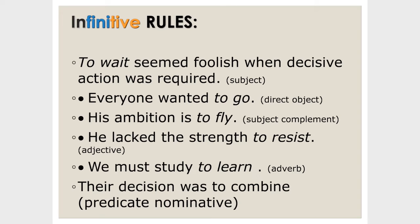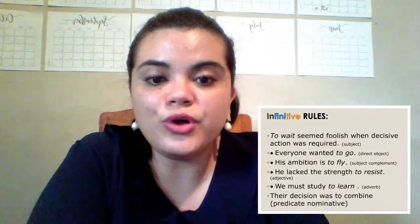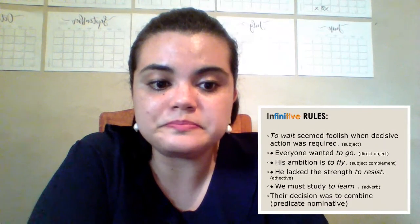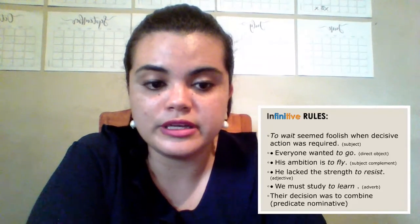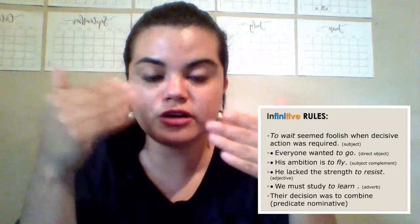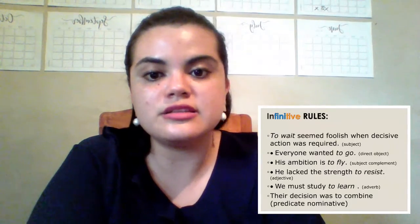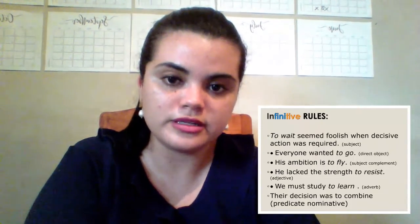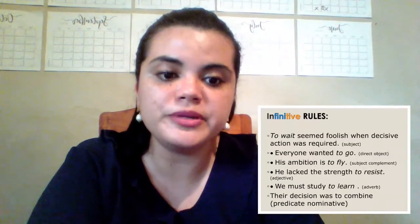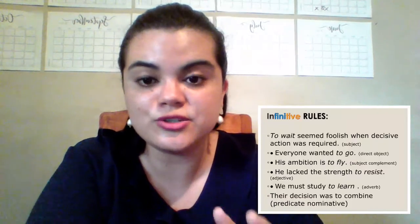'Their decision was to combine' — that is a predicate nominative. A predicate nominative uses a linking verb in the middle of the sentence that connects the two parts. Here 'was' is the linking verb that connects 'their decision' with 'to combine,' helping the sentence make sense. You will also find more on this in your book.